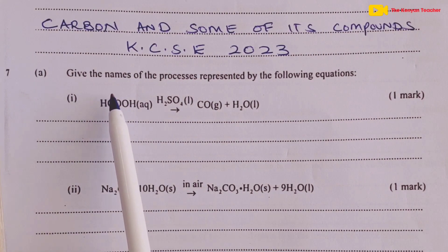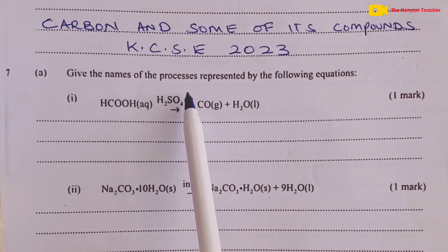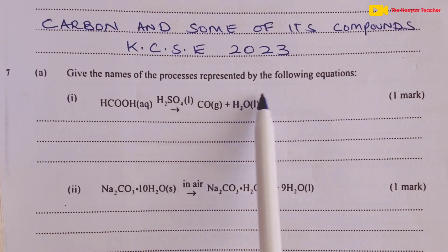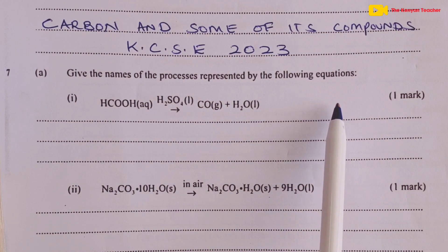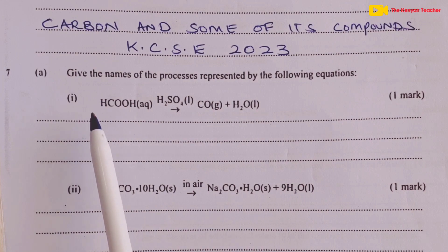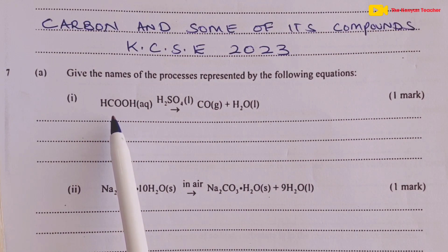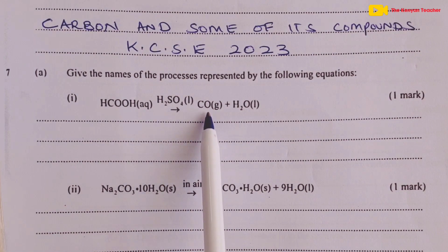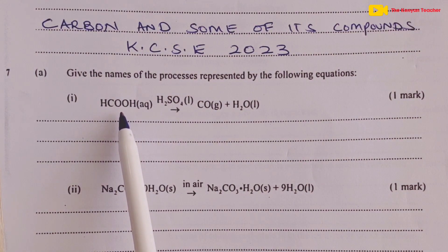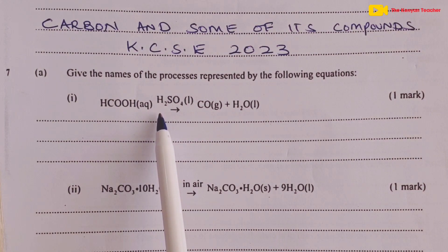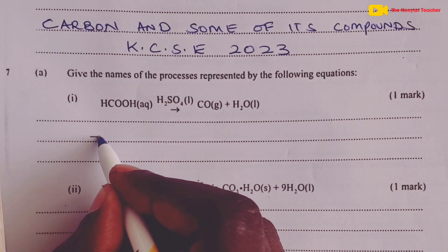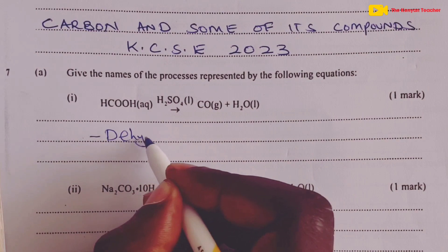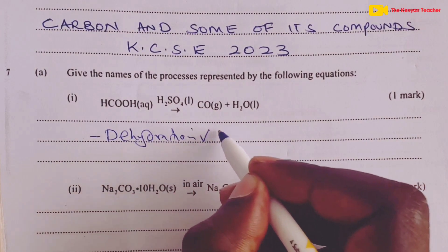Give the names of the processes represented by the following equations. For the first equation, we see laboratory preparation of carbon monoxide — we are obtaining the gas from methanoic acid using concentrated sulfuric acid. This process is dehydration, for the first mark.